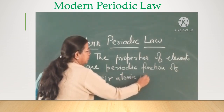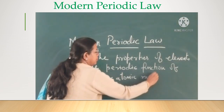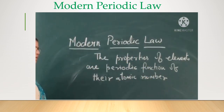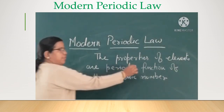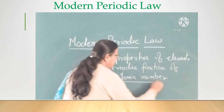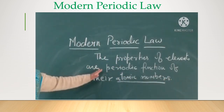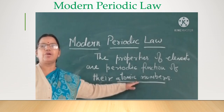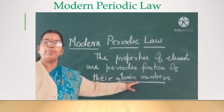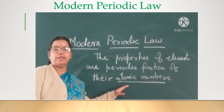Modern Periodic Law states that elements are periodic functions of their atomic numbers. That means when elements were arranged in the increasing order of their atomic numbers, the properties of elements repeated at regular intervals.